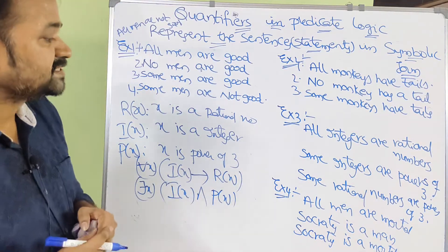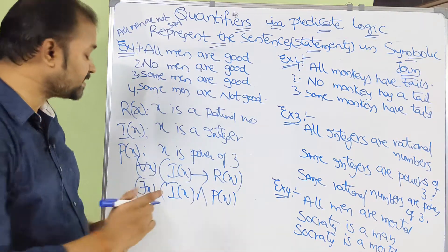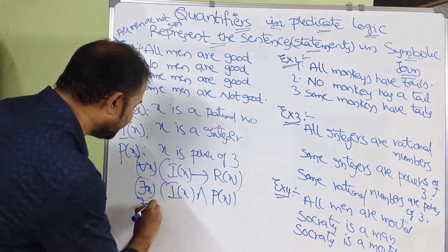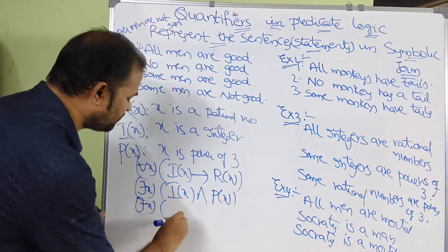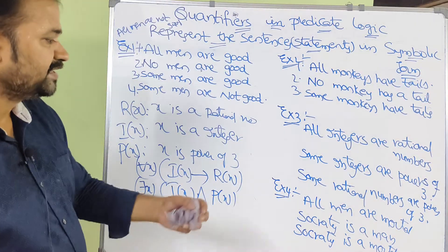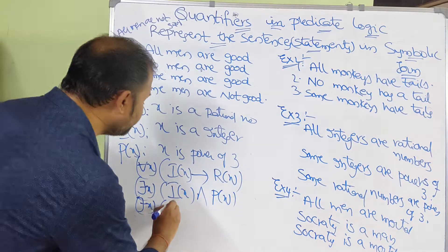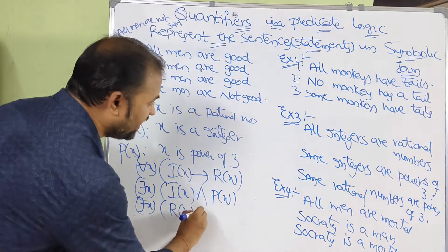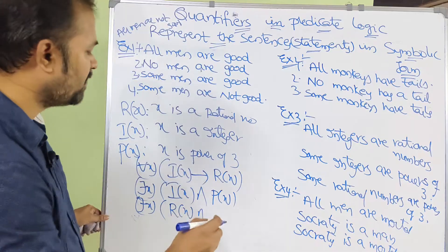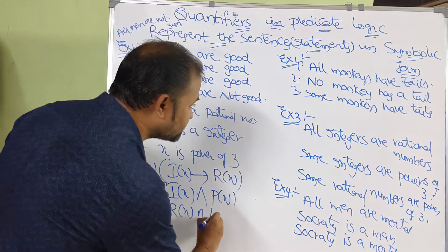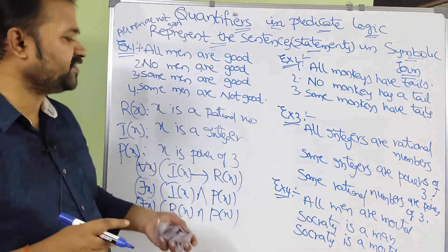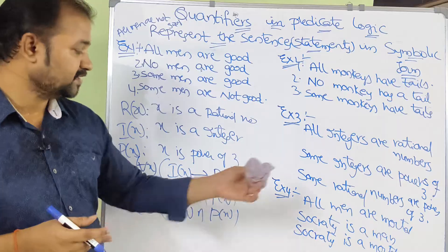Third sentence: 'Some rational numbers are powers of 3.' Some means existential quantifier — rational numbers means R(x), and AND — powers of 3 means P(x). So: ∃x(R(x) ∧ P(x)). In this way, we can represent sentences in symbolic form.